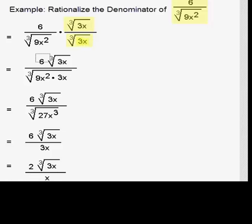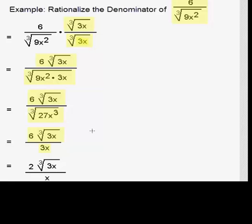What we get is 6 times the cube root of 3x in the numerator. We get the cube root of 9x squared times 3x in the denominator by the product rule for radicals, and that denominator turns into the cube root of 27x cubed. We still have our 6 times the cube root of 3x in the numerator. The denominator turns into 3x, because the cube root of 27x cubed gives us 3x. Now we can do a little canceling: 6 divided by 3 gives us 2. So our final answer is 2 times the cube root of 3x over x.